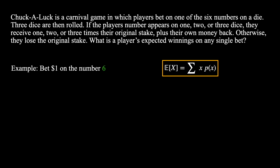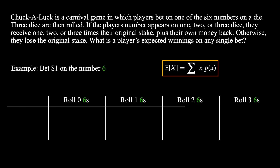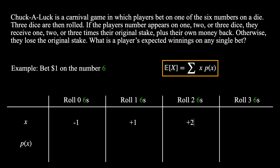We know that in this situation there are three dice. Therefore, we could get the situation where none of them roll a six, one of them rolls a six, two of them roll a six, or all three of them roll a six. For all of these situations we can now individually work out the returns and the probability of the occurrence. The returns are simply given in the question as minus one, plus one, plus two, and plus three.